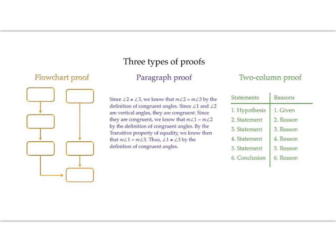Here are our three types of proofs. We've got the flowchart proof — it looks like a bunch of bubbles with some arrows. We've got paragraph proofs, which look like a paragraph similar to what you would write in English class. And then we have the two-column proof that we've already been introduced to in the previous lesson.